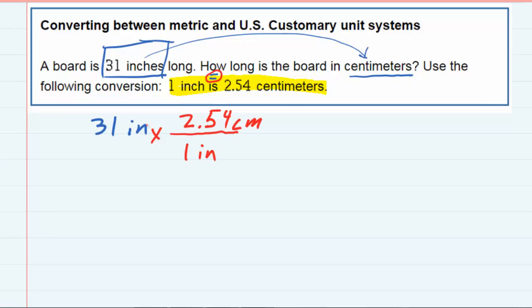So this way, the inches, one of them being in the top and the other being in the bottom, are going to cancel. And I'm left with 31 times 2.54, which is 78.74.